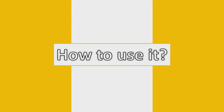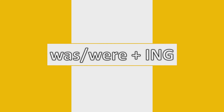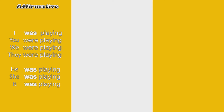Now let's see how to use past continuous. It's really easy — you just have to use the verb to be in the past, which is was or were, plus the verb with -ing. Let's see when to use was and were. In the affirmative, you put was with I, he, she, and it. So: I was playing, you were playing, we were playing, they were playing, he was playing, she was playing, it was playing.